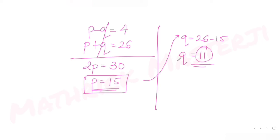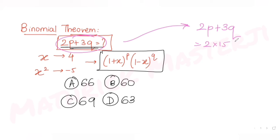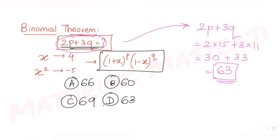With p equals 15 and q equals 11, we compute 2p plus 3q: 2 times 15 plus 3 times 11 equals 30 plus 33, which equals 63. This matches option D, so D is the correct answer.